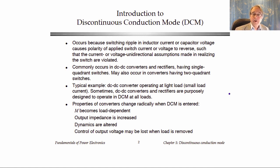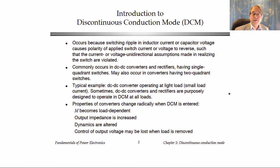Some converters are designed on purpose to always work in discontinuous mode. One advantage is that the current goes to zero before the end of the switching period, the diode turns off, and there's no reverse recovery when the MOSFET is next turned on, so there can be less switching loss. On the other hand, there are higher peak currents and more conduction loss — a trade-off. Even if not intentionally designed for this mode, many converters will operate in discontinuous mode at low output power, so we must be able to analyze those operating points.